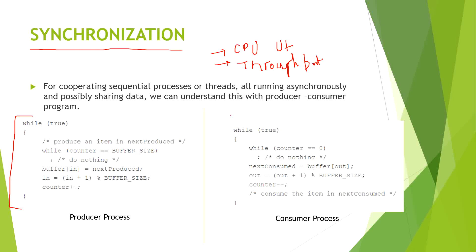The producer puts its goods in one bucket, and from that bucket the consumer consumes the goods. Both programs are using one bucket, so this bucket needs to be shared. It should be shared in such a way that it synchronizes itself and no process has to wait for another. Every time it runs, it will check whether the bucket is full or not.